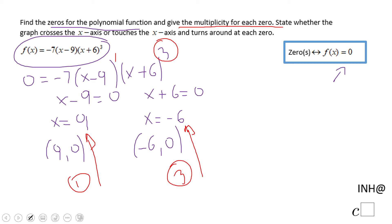And now we can go to the last part, which is asking us about what happens with our graph at those intercepts. If it crosses or touches the X axis, on both of them, the graph is gonna cross the X axis.